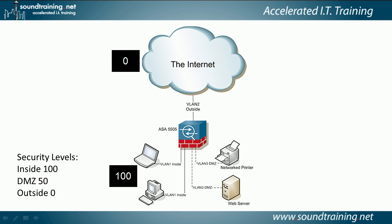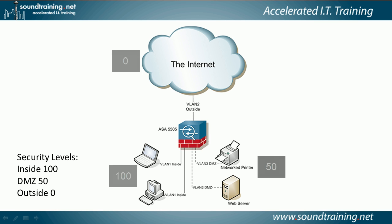You actually assign security levels to interfaces, not networks, but it's easier to talk about assigning them to networks. The DMZ has a security level of 50, which means traffic can flow from the DMZ to the internet and from the inside to the DMZ, but it can't flow from the DMZ to the inside. If we want to poke a hole in the firewall to allow traffic from the internet into the DMZ for our web server, we do that with static NAT combined with access control lists. The NAT directs the traffic and the access control lists permit or deny it.